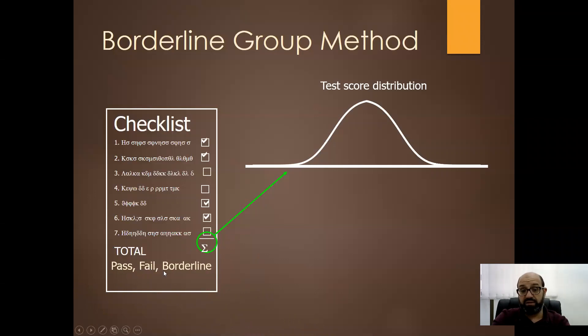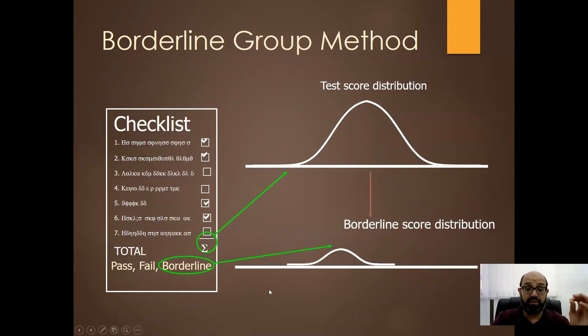Then the assessor has another overall judgment or global rating which evaluates the performance of the students as pass, fail, or borderline. This is subjective evaluation of a trained professor who is well trained on the definition of borderline student.